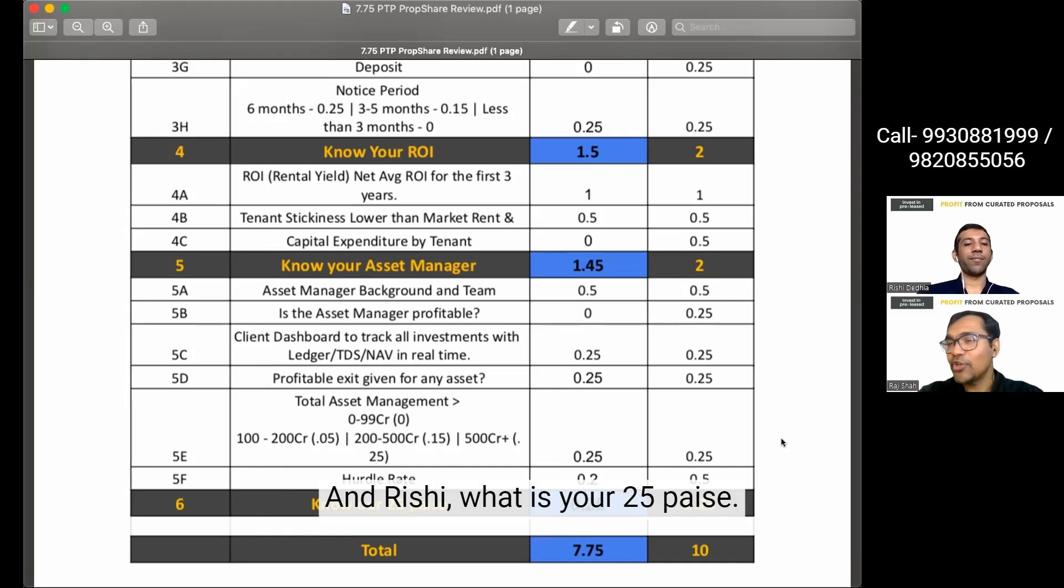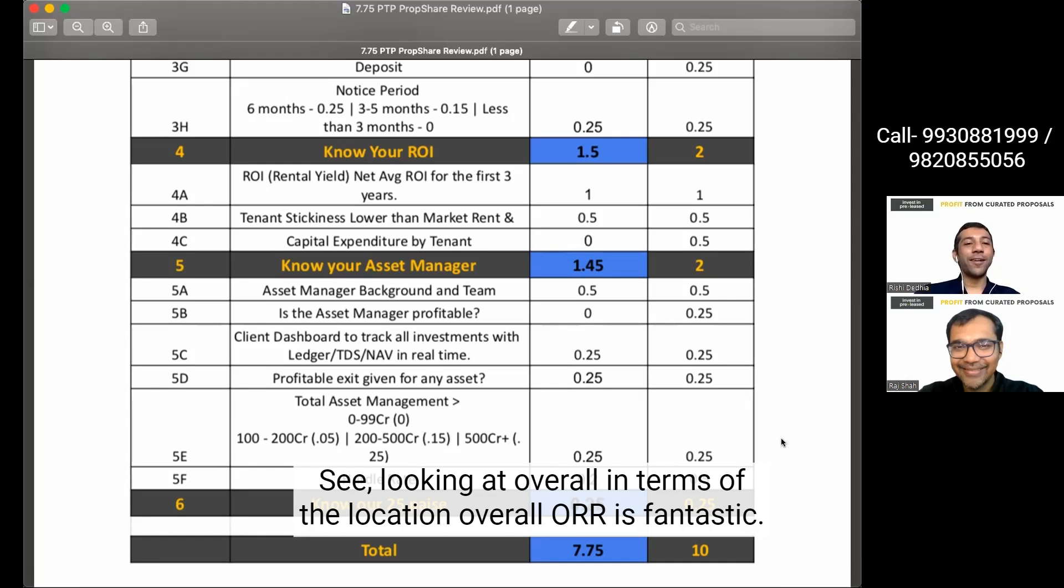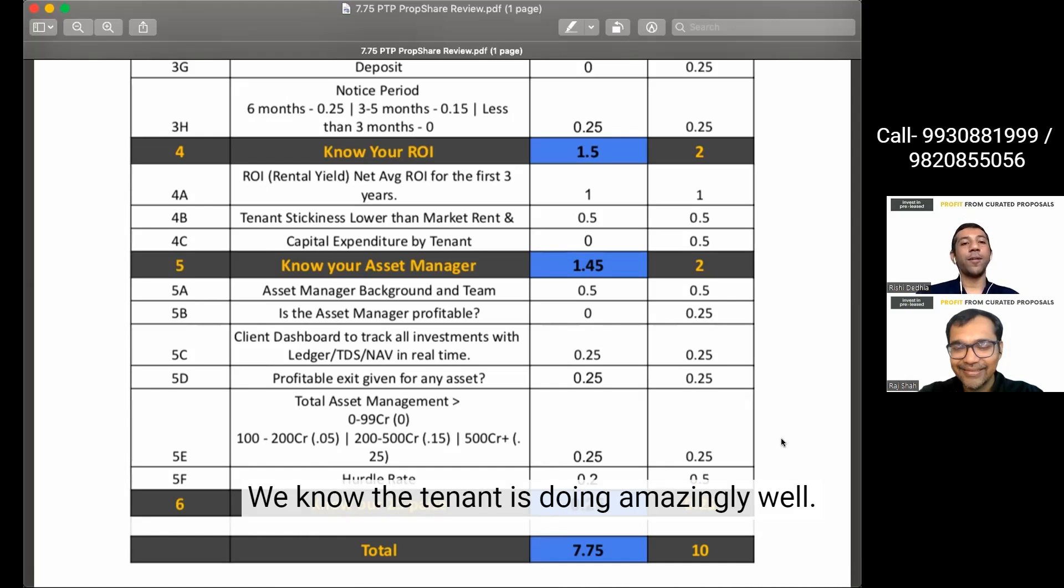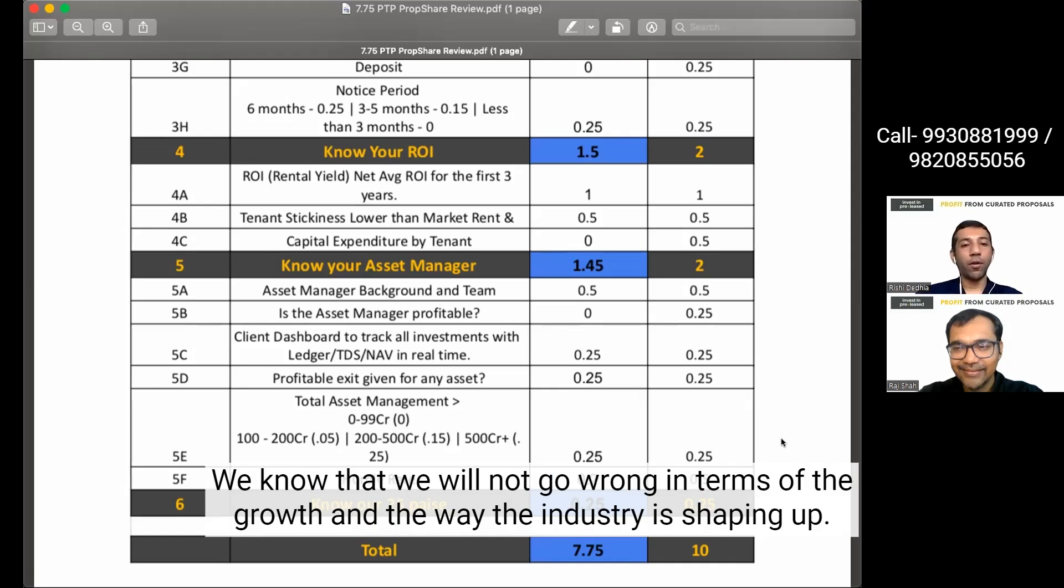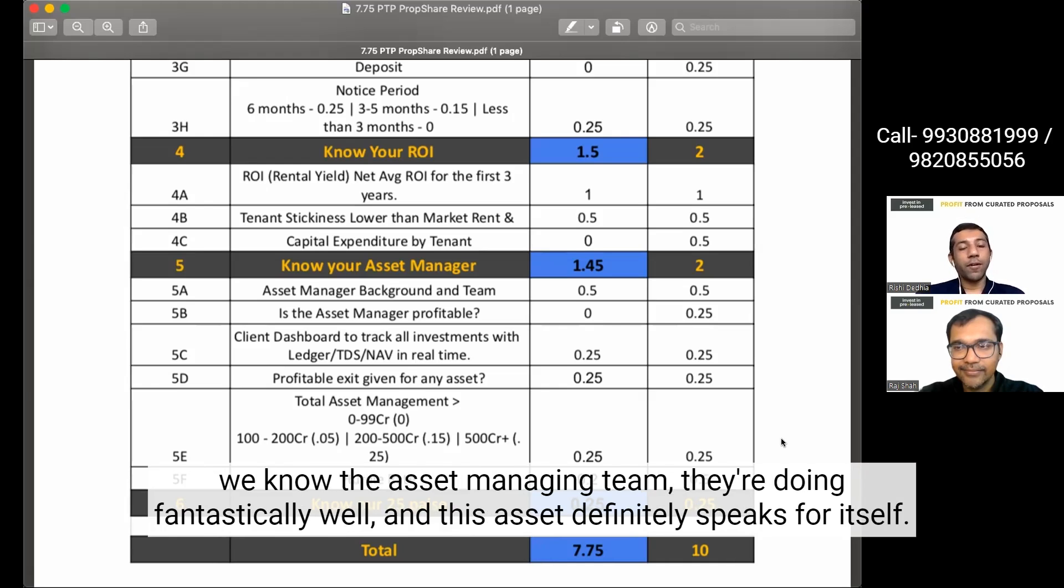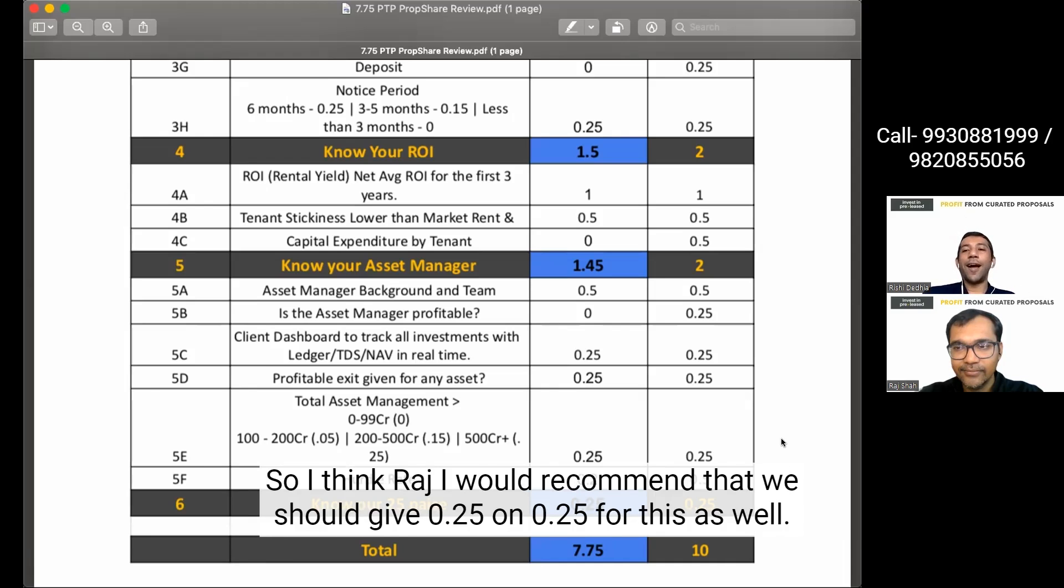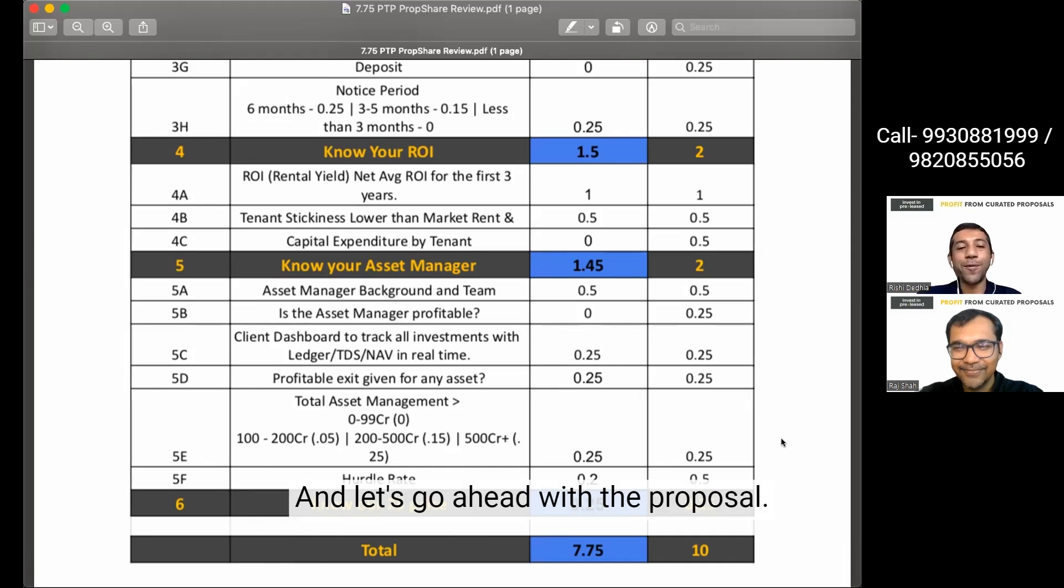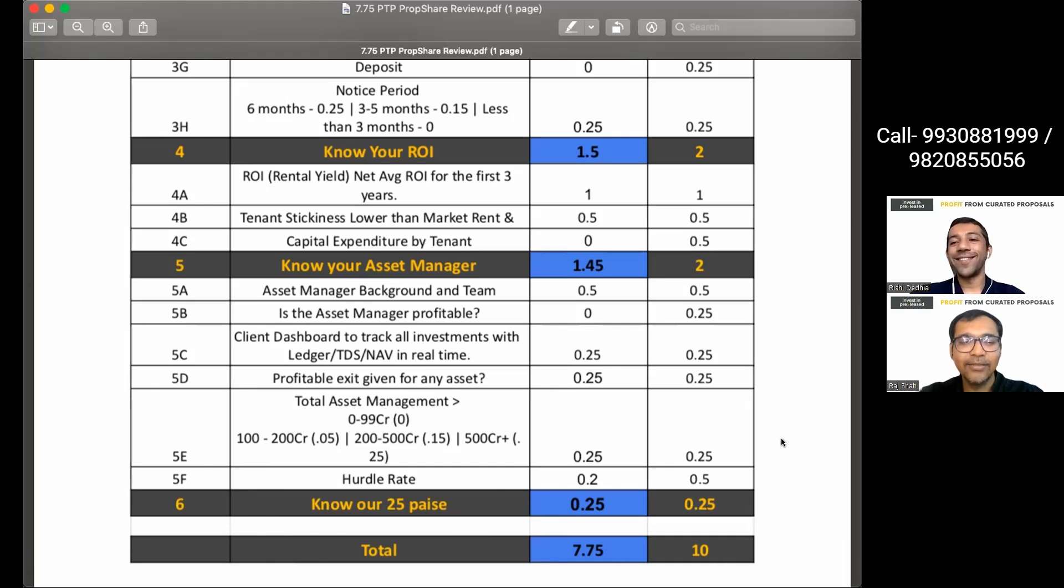And Rishi, what is your purchase? See, looking at overall in terms of the location, overall is fantastic. We know the tenant is doing amazingly well. Looking at the tenant industry overview, we know that we'll not go wrong in terms of the growth and the way the industry is shaping up. Looking at the ROI, looking at the asset manager, all in all, it's a good proposal to be logged in for. We know the asset managing team, they are doing fantastically well. And this asset definitely speaks for itself. So I think Raj, I would recommend that we should give 0.25 on 0.25 for this as well. And let's go ahead with the proposal.